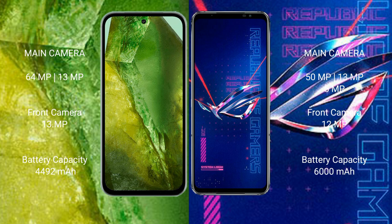Google Pixel 8a has a 4492mAh battery with 18-watt fast charging support. ASUS ROG Phone 6 Pro has a 6000mAh battery with 65-watt fast charging. Google Pixel 8a starts at $499, while the ASUS ROG Phone 6 Pro starts at $899.